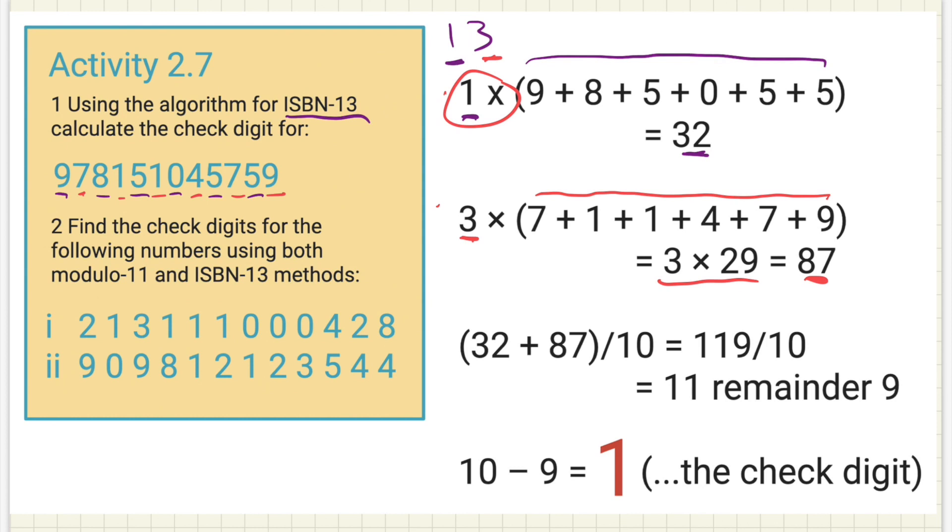Then what we've got to do is add these two numbers together. Add 32 and 87 together. And then we're going to divide this number by 10. So 119, adding 32 and 87 together, 119 divided by 10 equals 11 remainder 9. And then what we're doing, this is quite bizarre, we take the 10 we've got here, put it here, and we take that remainder 9, we take that remainder away from 10, and we have a check digit of one. So that's ISBN-13.